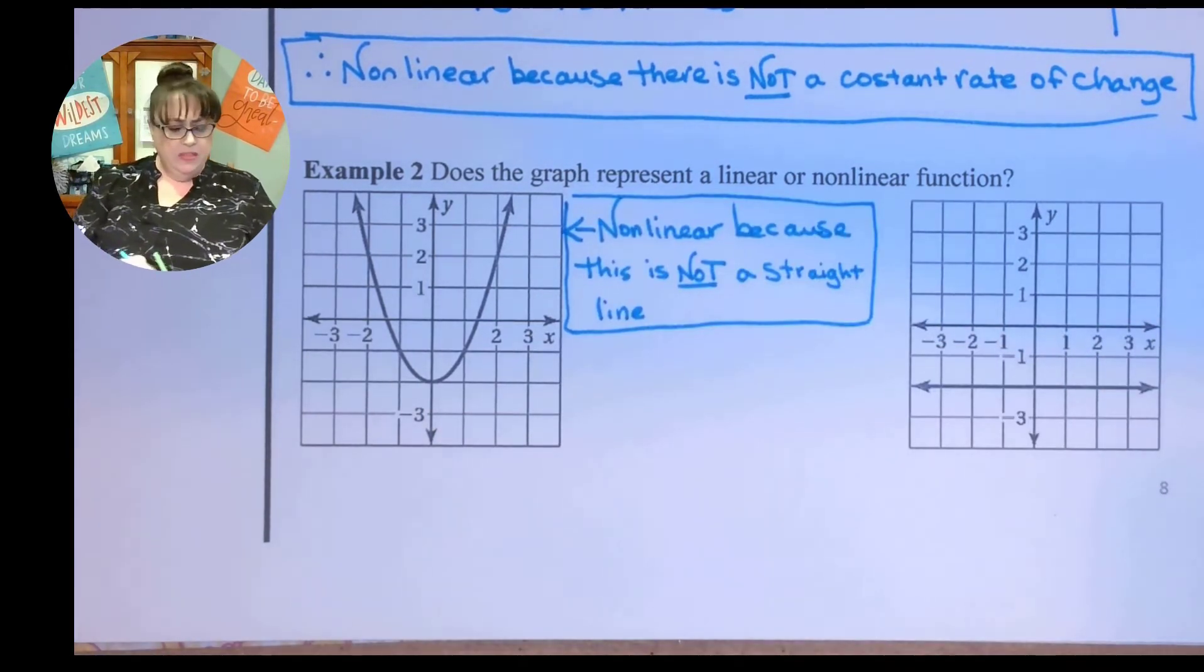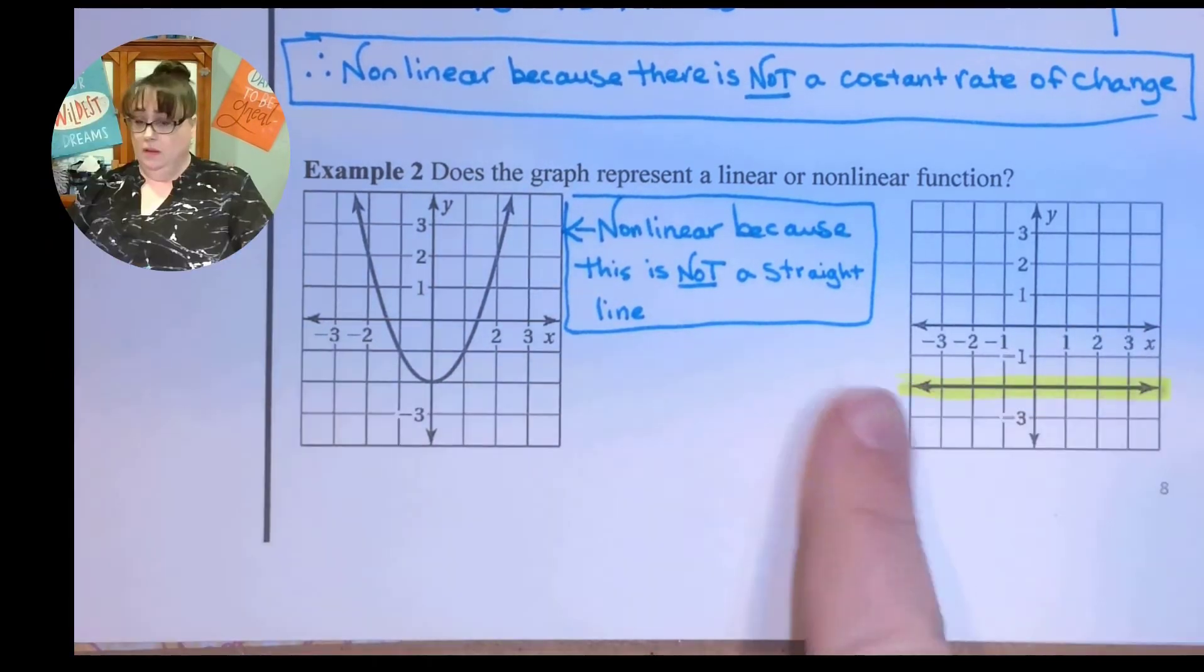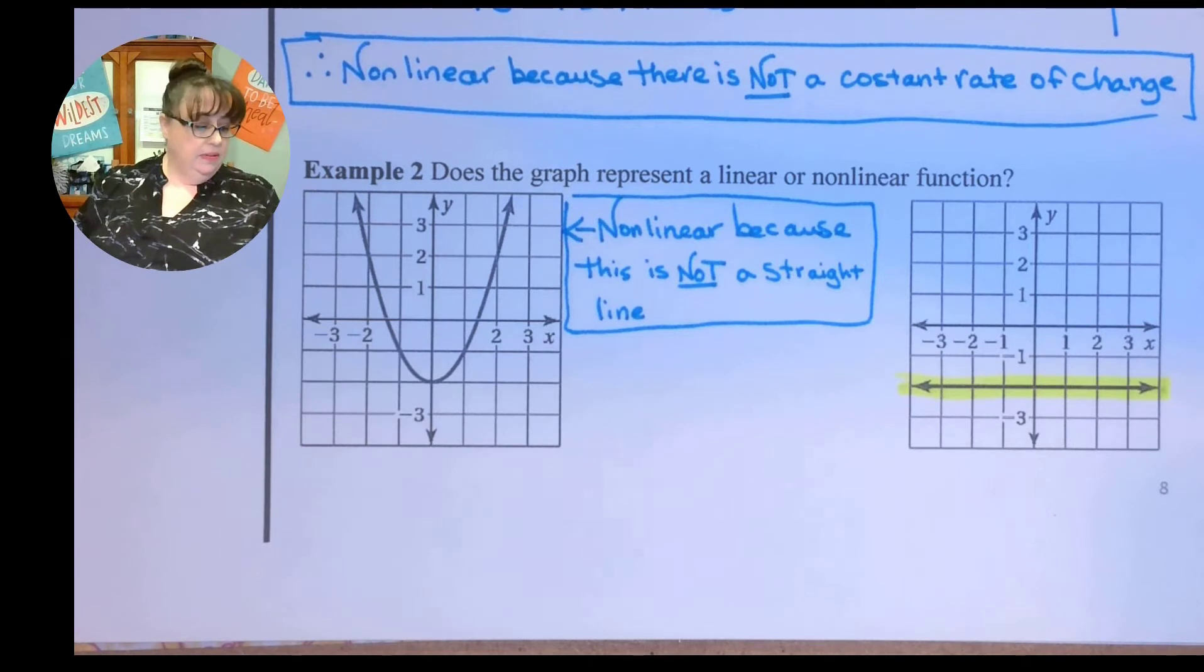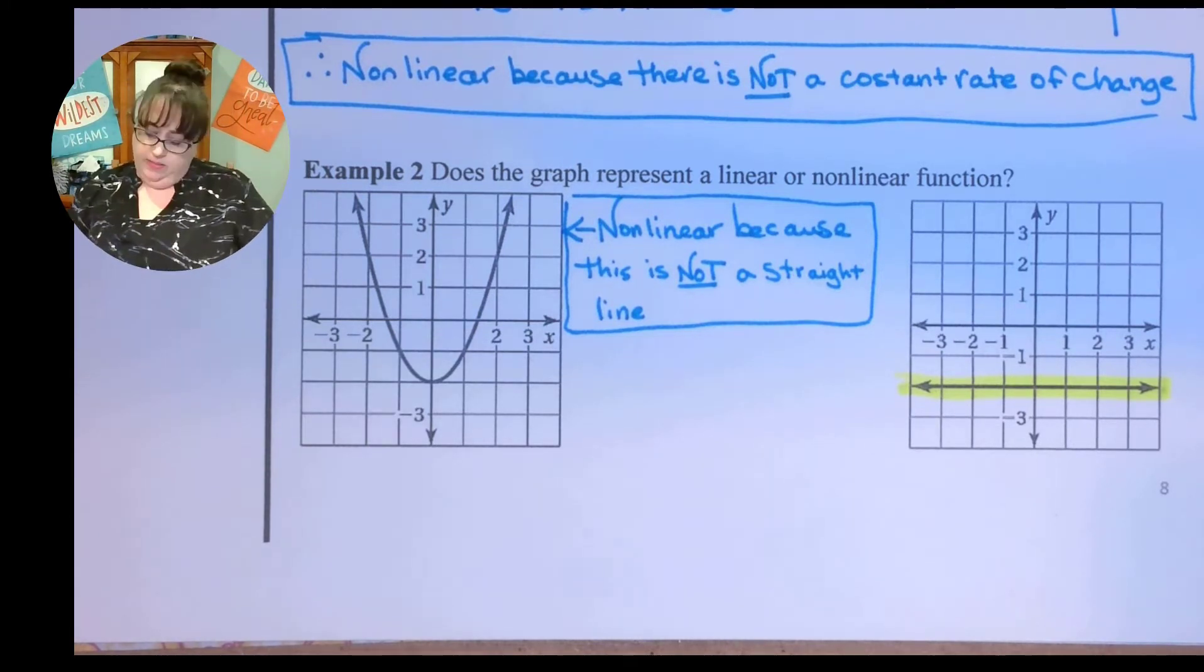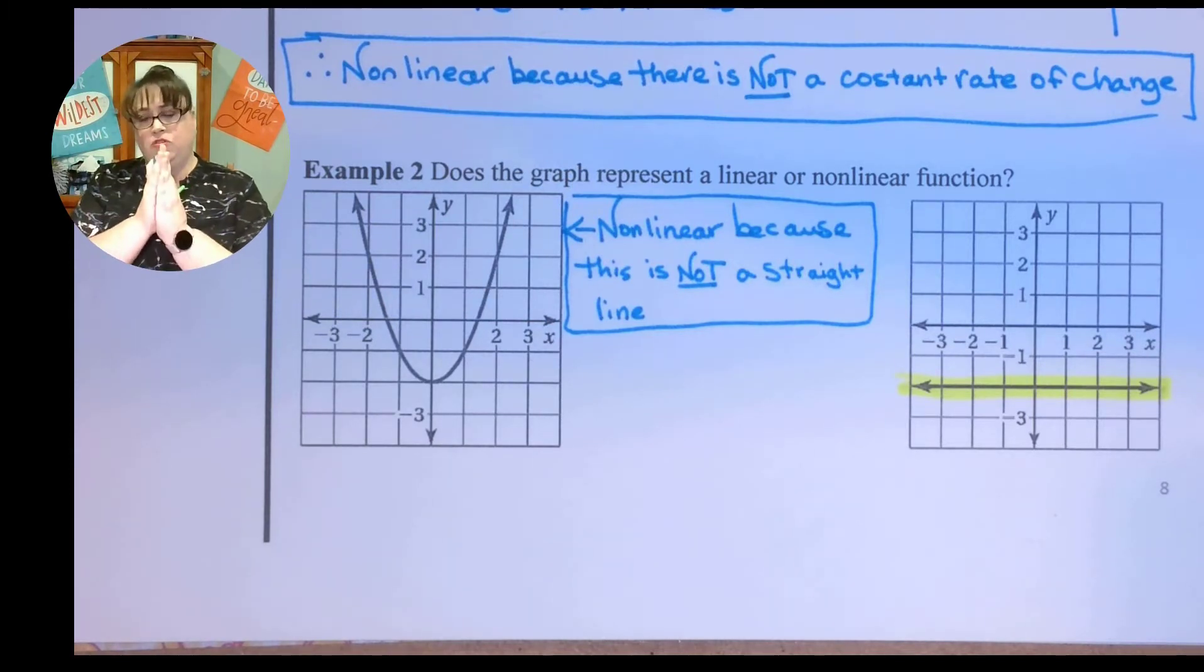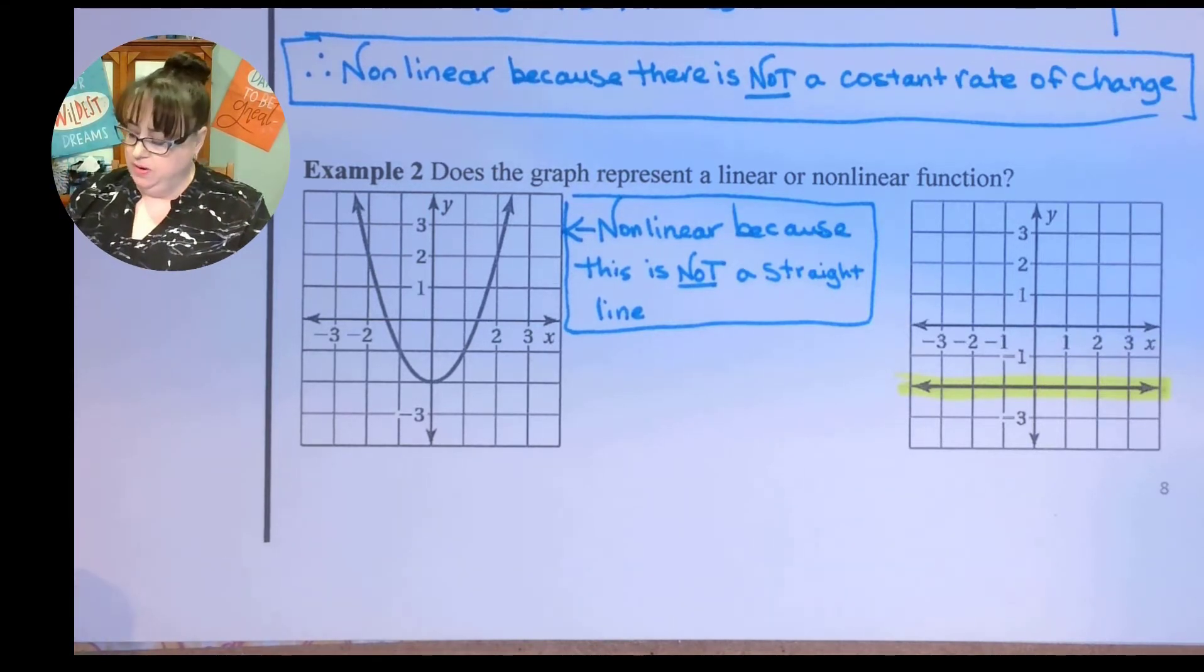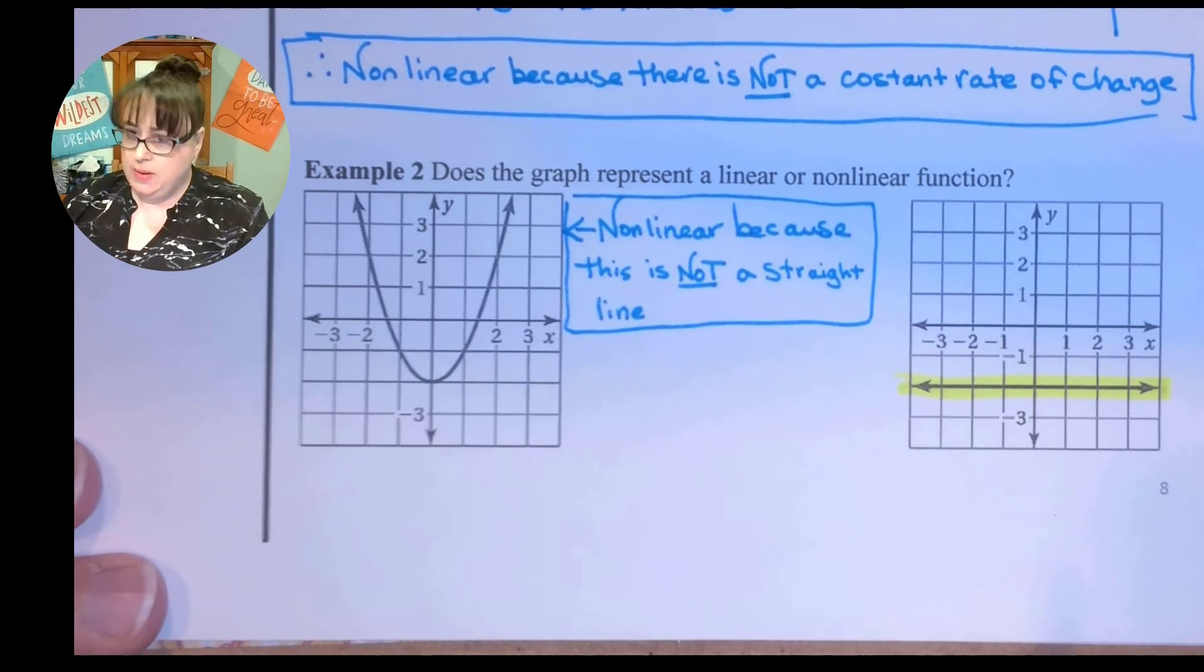Now let's look at this one. This one might be a little bit harder for you to see, but it is this part right here that is linear because it is a non-vertical straight line. Now there is a reason I said non-vertical. If that line was to go straight up and down and be vertical, that is not a function.